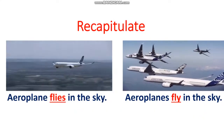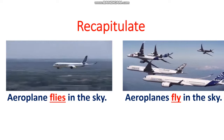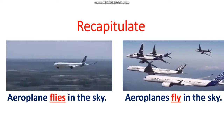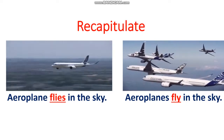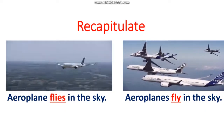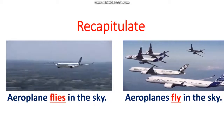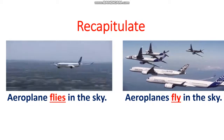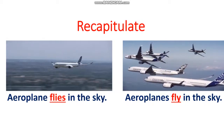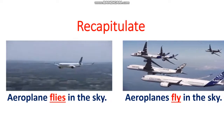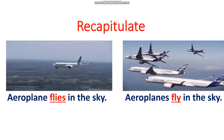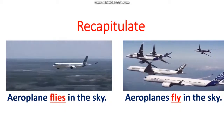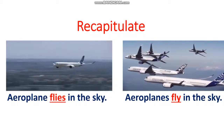Let's revise both the rules with the help of examples. 'Aeroplane flies in the sky.' Here, there is only one aeroplane, so S will be added to fly. Remember students, here Y will be removed from fly and IES will be added. But when there are more than one aeroplane, then we will simply use fly as a verb. For example, 'Aeroplanes fly in the sky.'